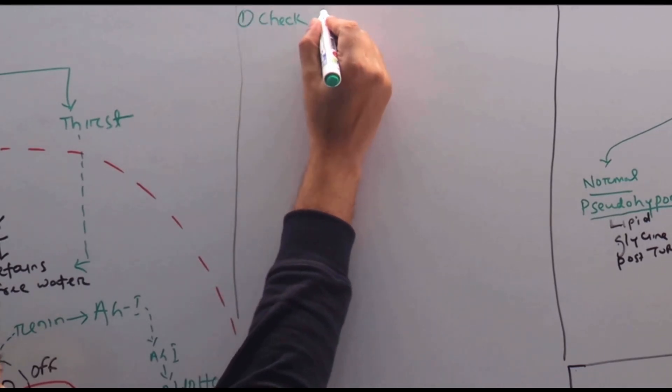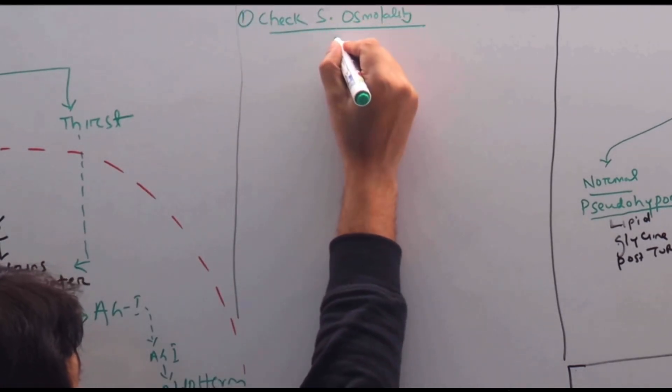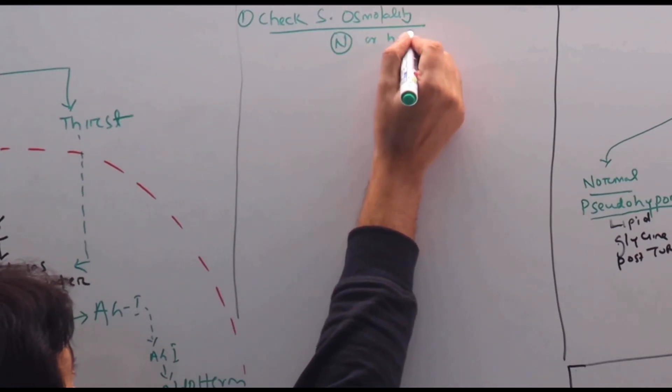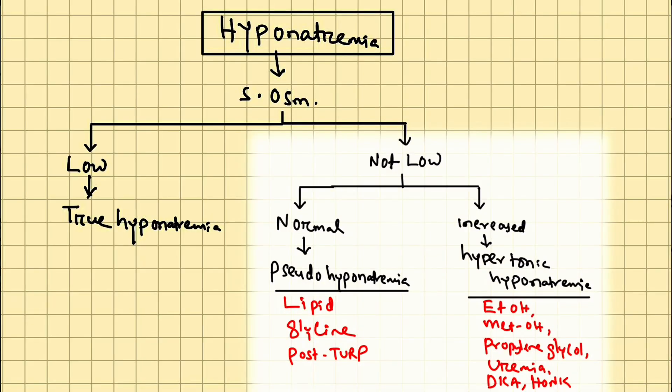First is check serum osmolality. If it is normal or high, discussion ends here. Because if it is normal or high, we have a separate differential diagnosis. It will not come under true hyponatremia.